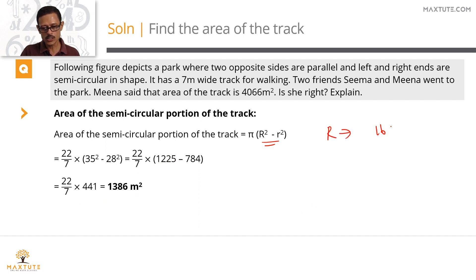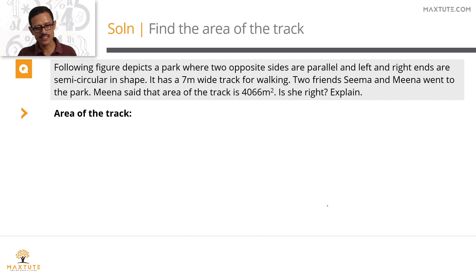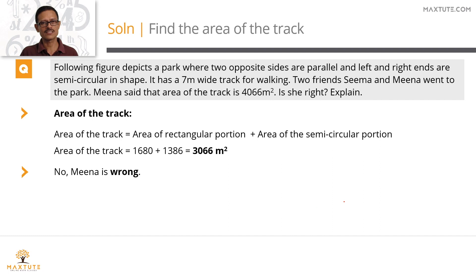Rectangular region, we found the area to be 1680. Semicircular part, we computed it right now to be 1386. It adds up to 66. We have a 1 carry over which will make it 0. 3066 meter square is the area of the walking track. What did she claim? Meena claimed it to be 4066. She made a mistake. Meena, you are wrong. The correct answer is 3066.